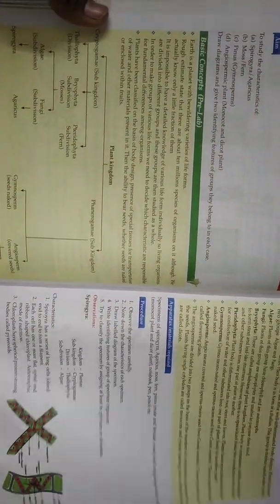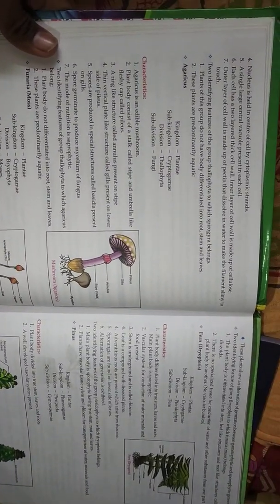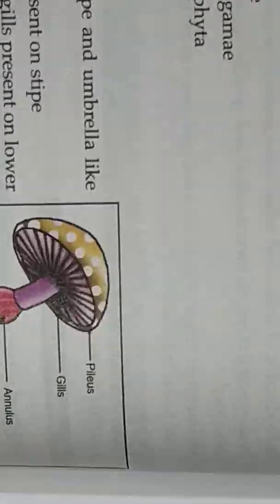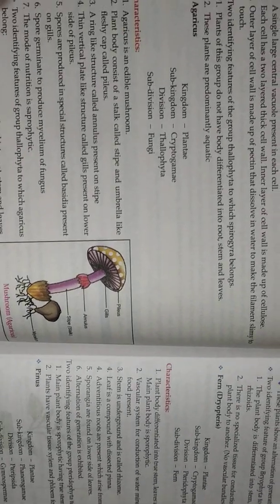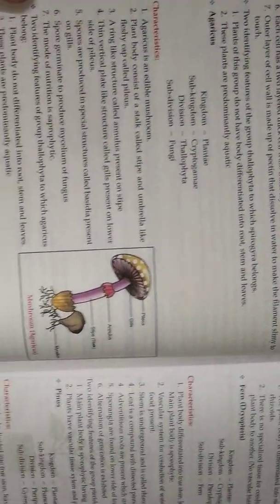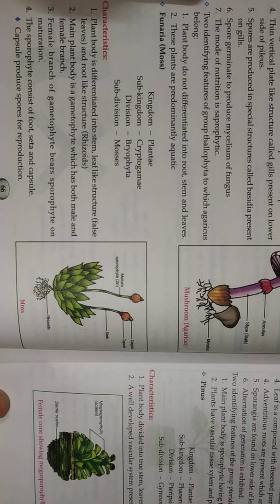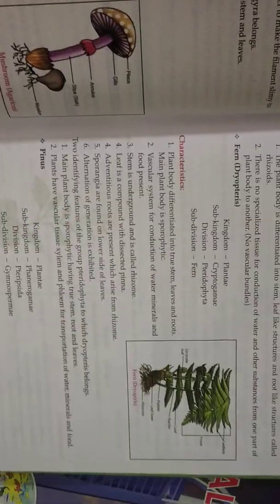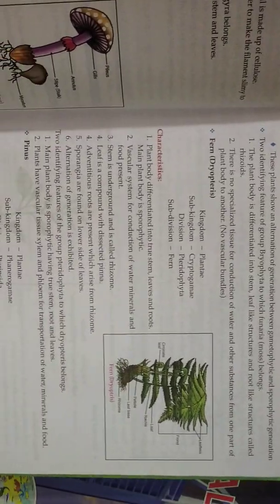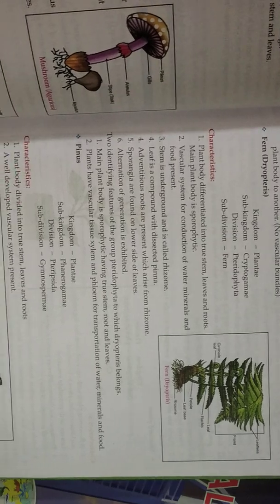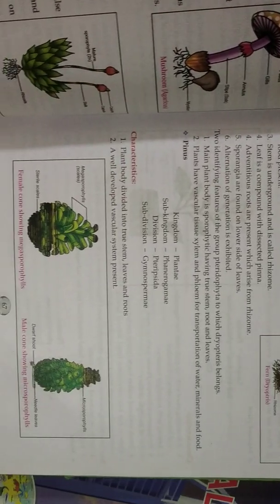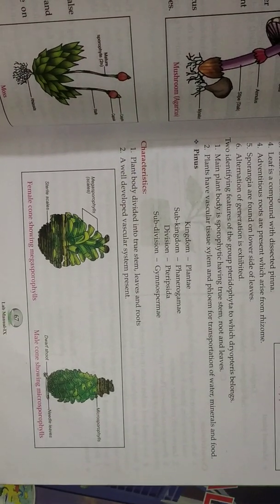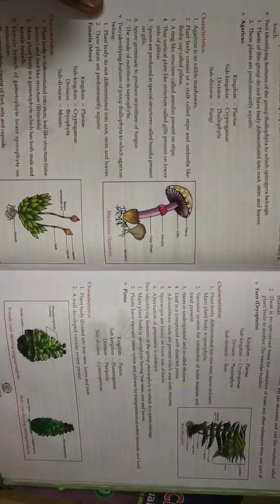And then the next page, you see the next page. Characteristics. And then they come on the next page. Fern. And then its characteristics. Characteristics. And then next page.